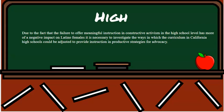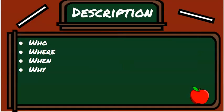Now let's look at a high-scoring example where the student would earn the points: 'Due to the fact that the failure to offer meaningful instruction and constructive activism at the high school level has more of a negative impact on Latino females, it is necessary to investigate the ways in which the curriculum in California high schools could be adjusted to provide instruction in productive strategies for advocacy.' We're still talking about activism, but specifically how instruction in constructive activism impacts Latino females within the curriculum for California high schools. As an AP reader, I would clearly understand the focus of this paper and the boundaries of the research.